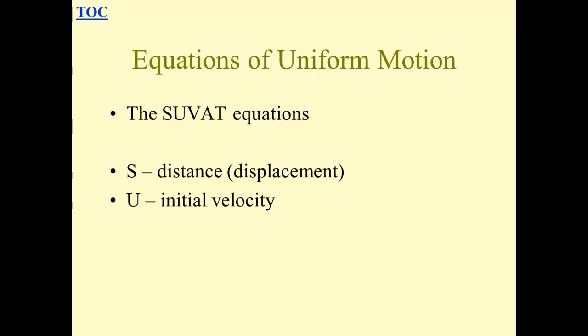The equations of uniform motion, otherwise known as the Suvatt equations. S is for distance or displacement, don't ask me why. U comes before V, so U is the initial velocity, V is the final velocity. A is the acceleration and T is the time.